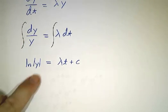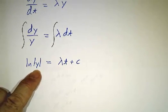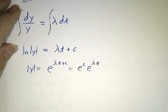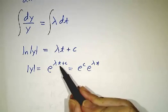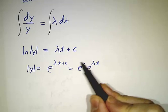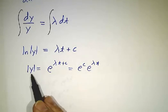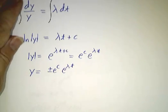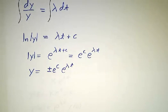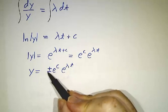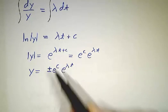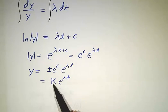If you have the natural log of something, how do you get the something? You exponentiate. And e^(lambda t + c) is just a constant, e^c times e^(lambda t). And this was the absolute value, so y must have been plus or minus that. And we take this whole thing plus or minus e^c and we call that a new constant, let's call it K.